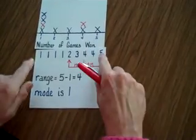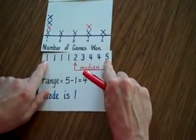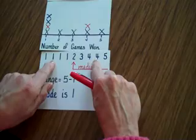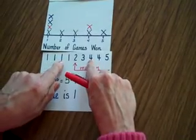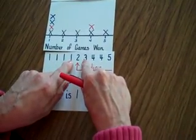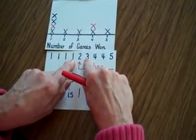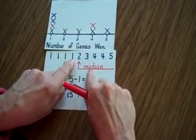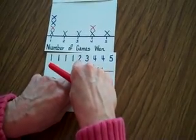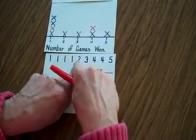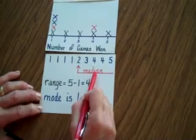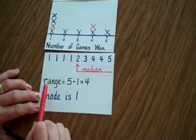When looking at that information, you can go from the outside and hop toward the center. And when you do that and land in the middle, that number in the middle we call it the median — I sometimes refer to it as the middle number. So the median is the number in the middle.